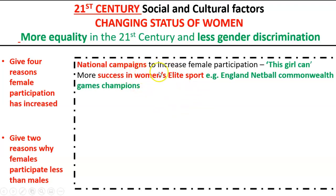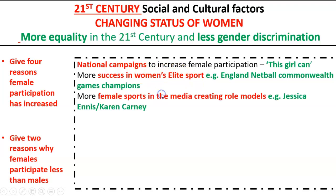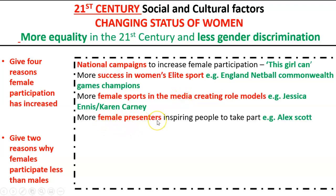There are also more female sports in the media, which creates role models — for example, Jessica Ennis, the poster girl of the 2012 London Olympics, and footballer Karen Carney. Not only are there more female sports in the media, but more female presenters fronting shows. For example, Alex Scott has just been named as a Football Focus presenter — the first female ever to take a presenting role for a male football show.